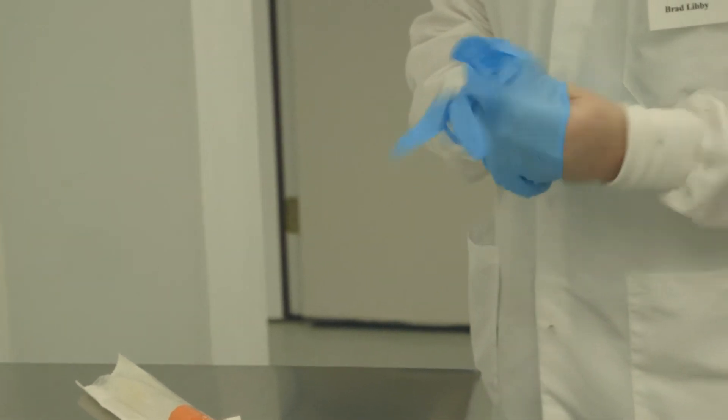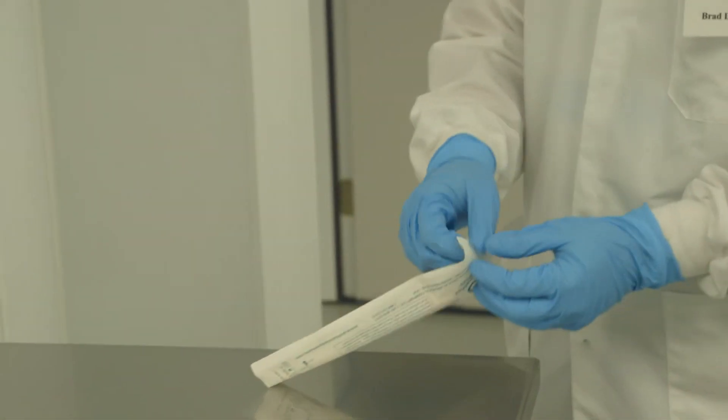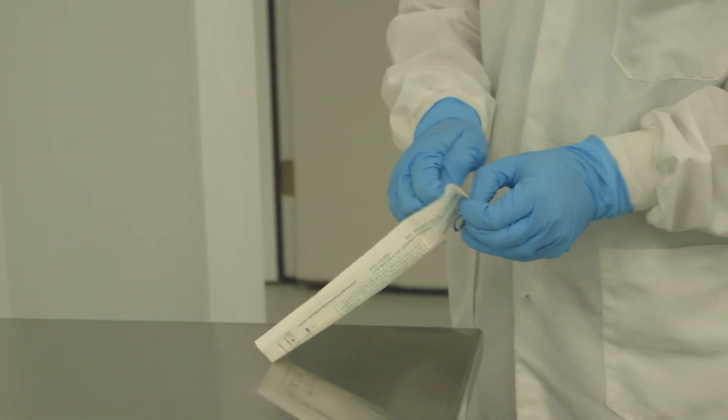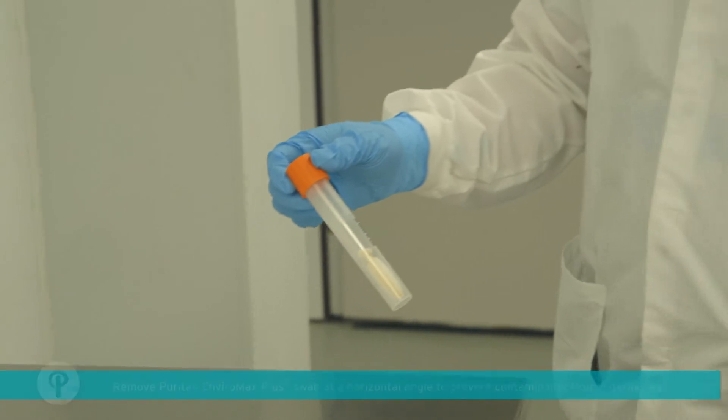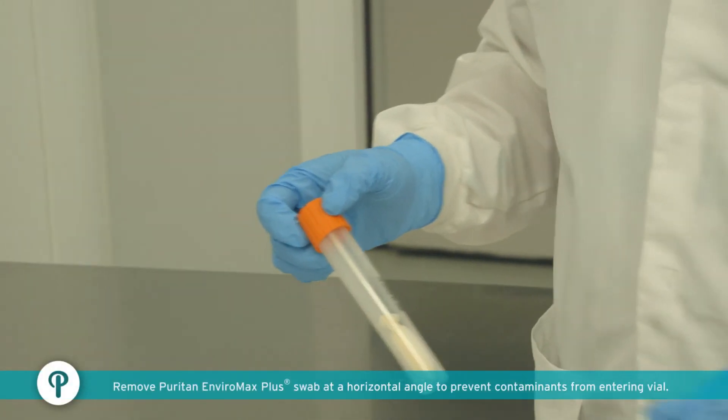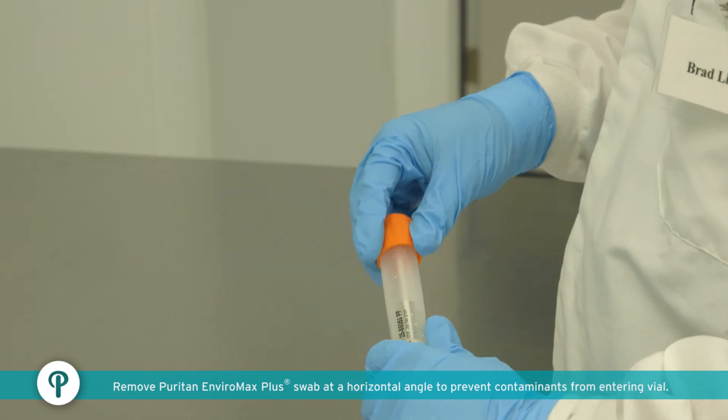Put latex gloves onto hands. Open and remove Puritan EnviroMax Plus Collection Kit from its package and place on a clean surface until ready for use. Remove Puritan EnviroMax Plus swab from vial by holding the cap and twisting counterclockwise.